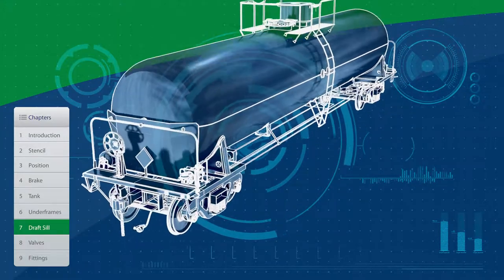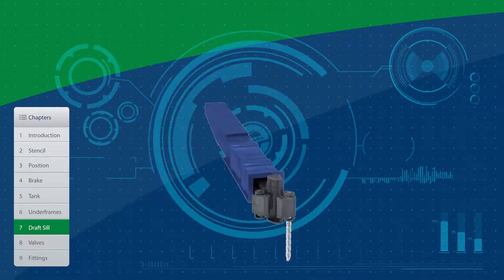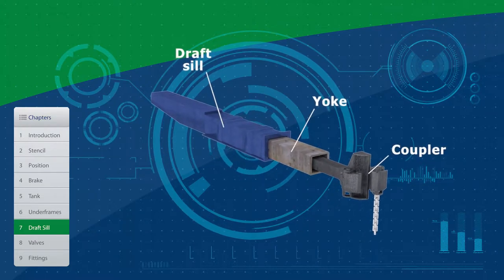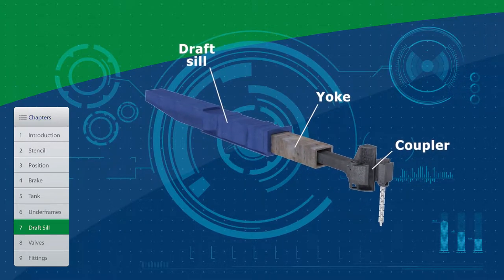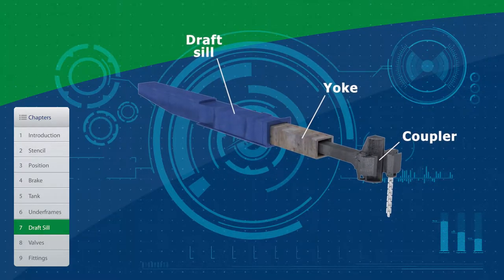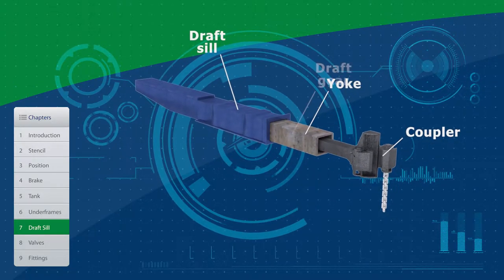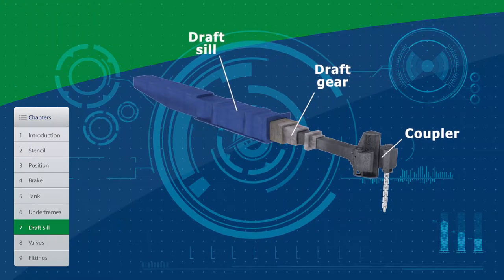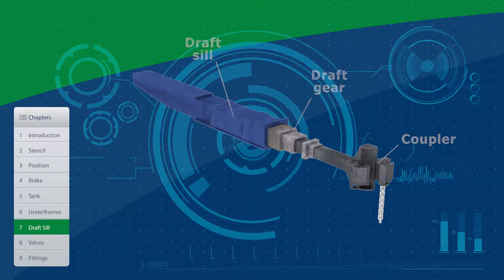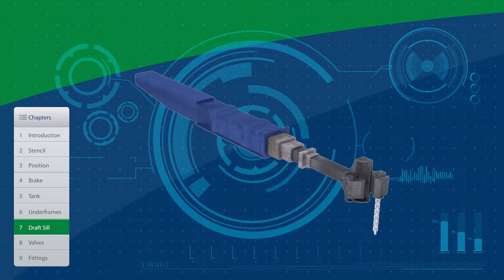The draft-sill also houses the yoke, the draft gear, and the coupler. The yoke, housed inside the draft-sill, keeps the draft gear and coupler enclosed and connected to each other, while allowing movement back and forth when the rail cars are pushed or pulled. The draft gear is the shock absorber which is indirectly connected to the coupler via the follower block. The coupler connects rail cars together.